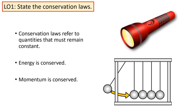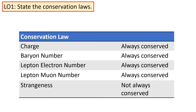Conservation laws refer to the fact that some quantities must remain constant over time. For example, energy is conserved — we may be able to transfer energy from one form into another, but we can never increase or decrease the supply; we can never create or destroy energy. Similarly, momentum is also conserved.